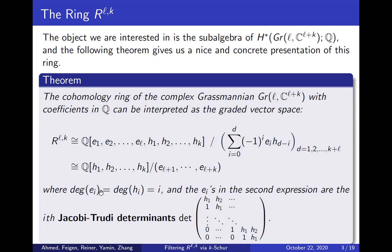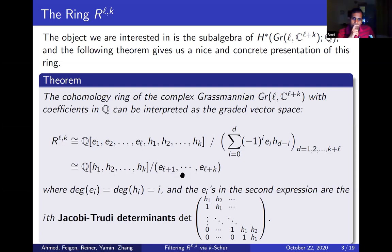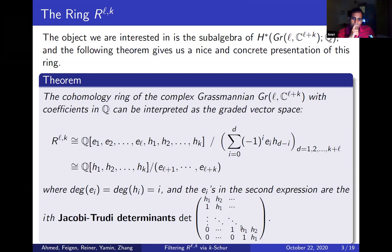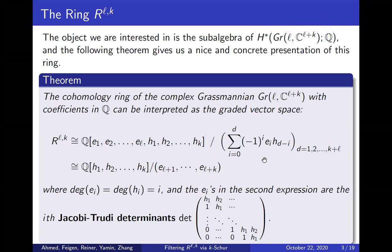It's a graded vector space where the degree of e_i and the degree of h_i are both i. We can also present R_{l,k} as generated by h_1 through h_k, quotienting out by e_{l+1} through e_{l+k}, where the e_i's are presented as the i-th Jacobi-Trudi determinant. This polynomial ring in l+k variables, quotiented out accordingly, is the cohomology ring we focus on.